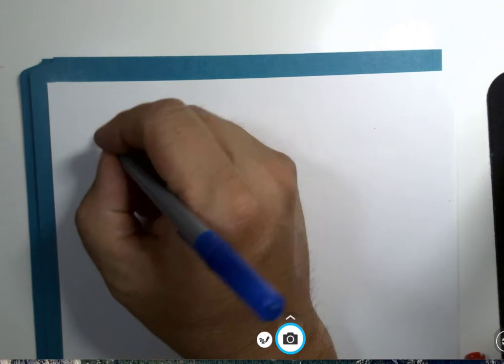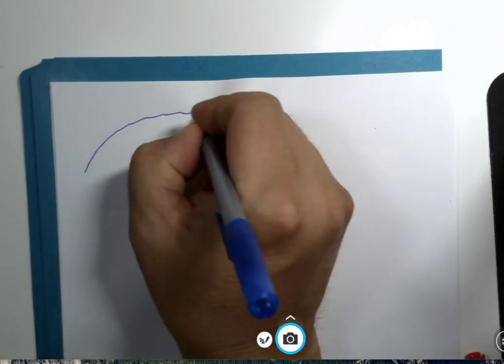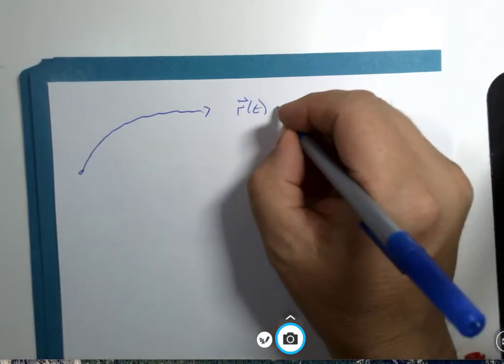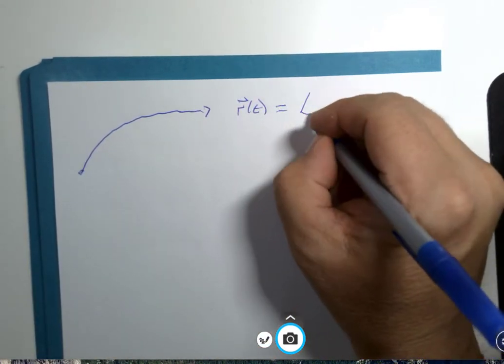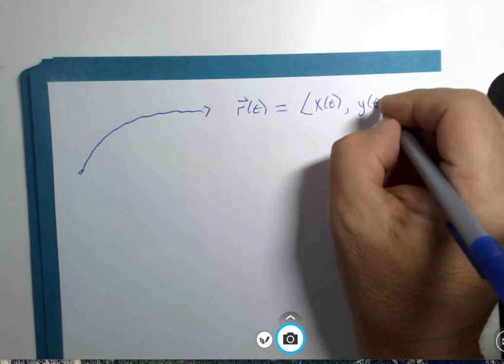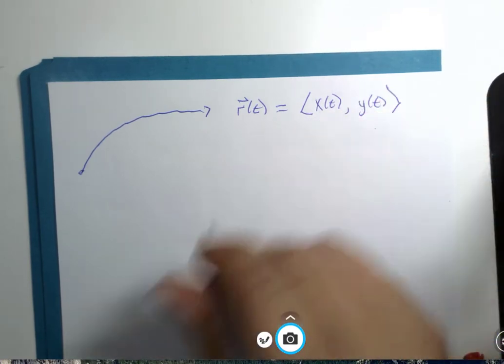So, let's suppose I look at this curve again, r of t, and we're going to look at the two-dimension case only.